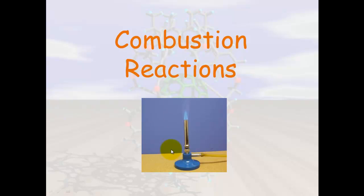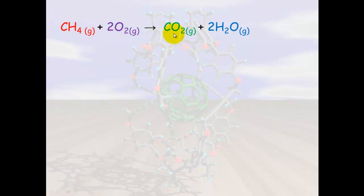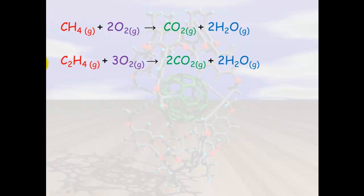Combustion reactions are one of the most common reactions with hydrocarbons, and we use them in the lab when we burn methane. Burning something means reacting it with oxygen. So methane gas reacts with oxygen and we always produce carbon dioxide and water. Whenever any hydrocarbon is combusted — reacted with oxygen — it will always produce carbon dioxide and water. For example, ethane reacts with oxygen to give carbon dioxide and water.